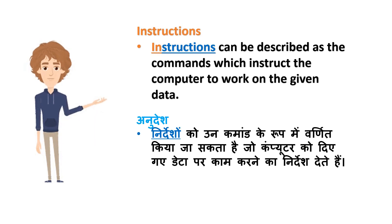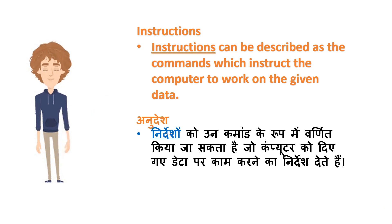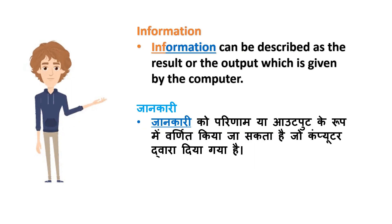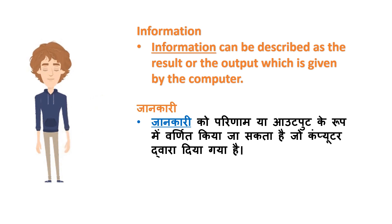Instructions can be described as the commands which instruct the computer to work on the given data. Nirdesh unko unkaman ke roope mein varnit kiya ja sakta hai, jo computer ko diye gaye data par kaam karne ka nirdesh dete hai. Information can be described as the result or the output which is given by the computer. Jaankari ko parinaam ya output ke roope mein varnit kiya ja sakta hai, jo computer dwara diya gaya hai.